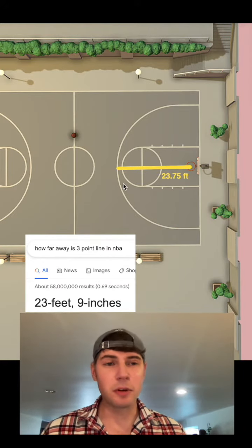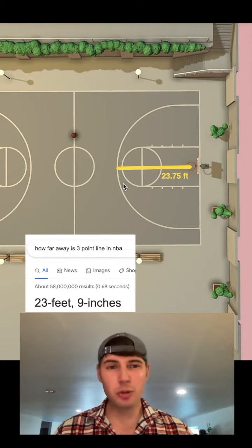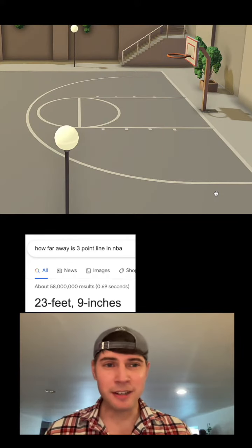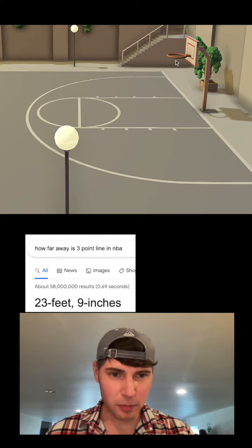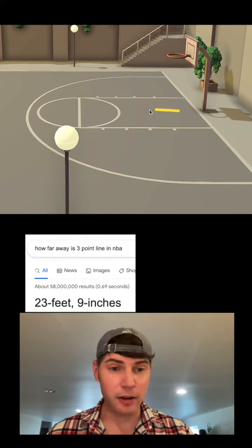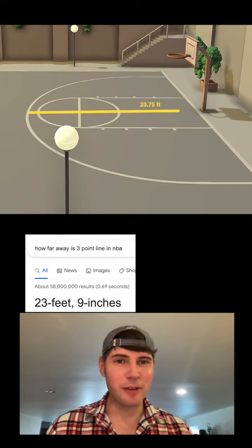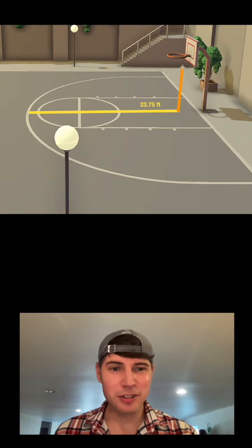But this is in a two-dimensional world. If we look at this in a three-dimensional world and zoom in, that 23.75 starts below the basket on the ground and goes to the shot on the ground. This is what is 23.75 feet. But the distance from the ground to the basket is equal to 10 feet.